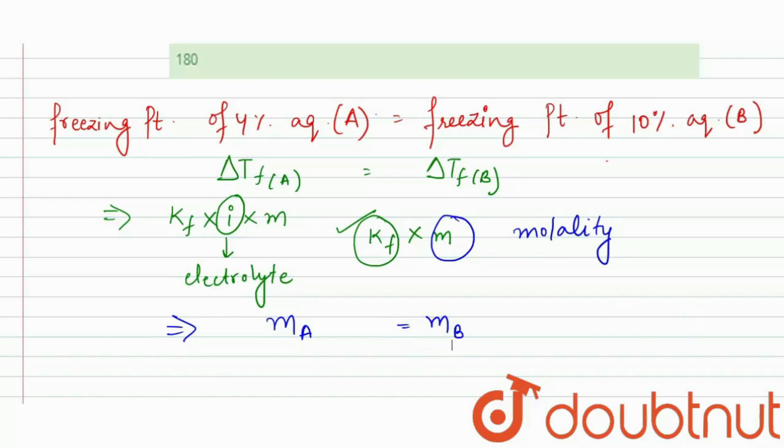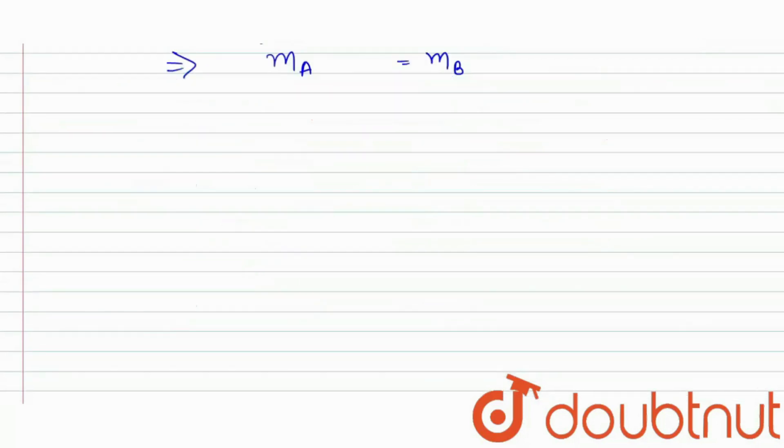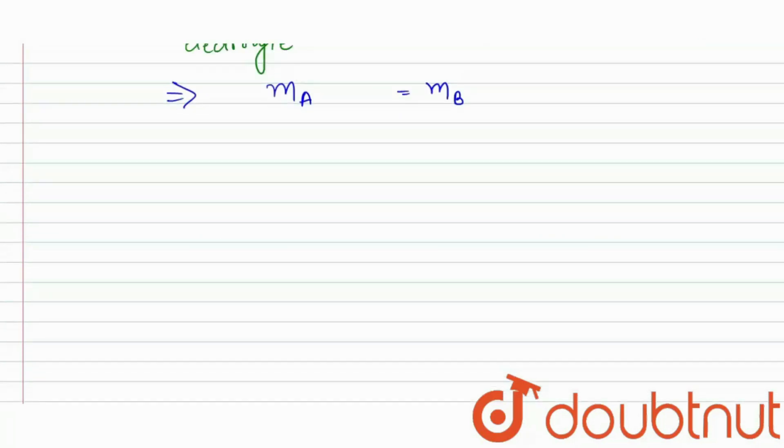We have the molality of A is equal to the molality of B. Now, we know that the molality formula is weight of solute upon molar mass of A into 1000.